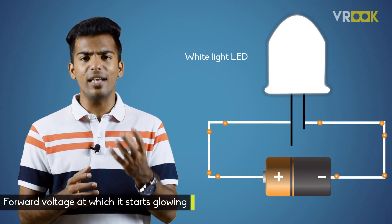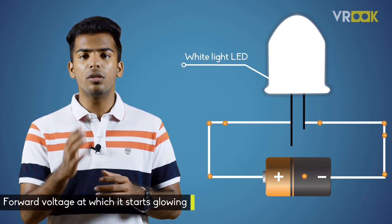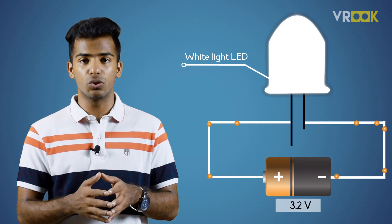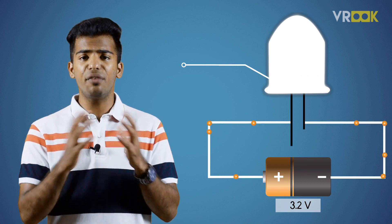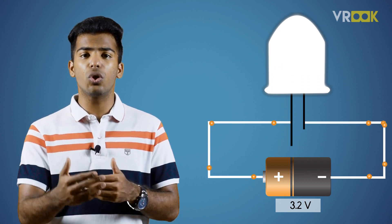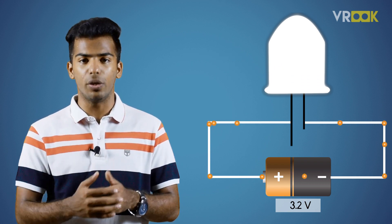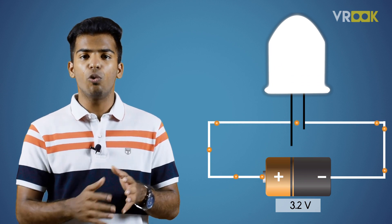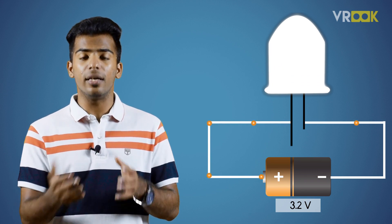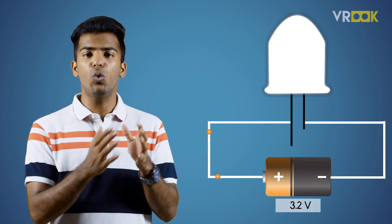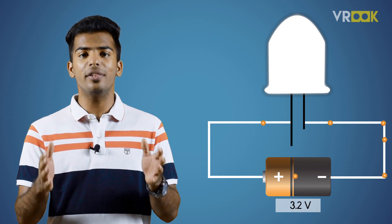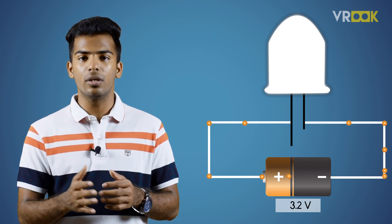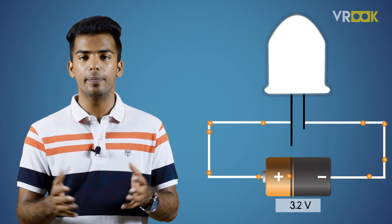For a white light LED, it will be around 3.2 volts. So you get different colored LEDs based on their forward voltage. In the case of white LEDs, when you supply 3.2 volts, the current will flow in the LED and it glows. Anything less, it won't.